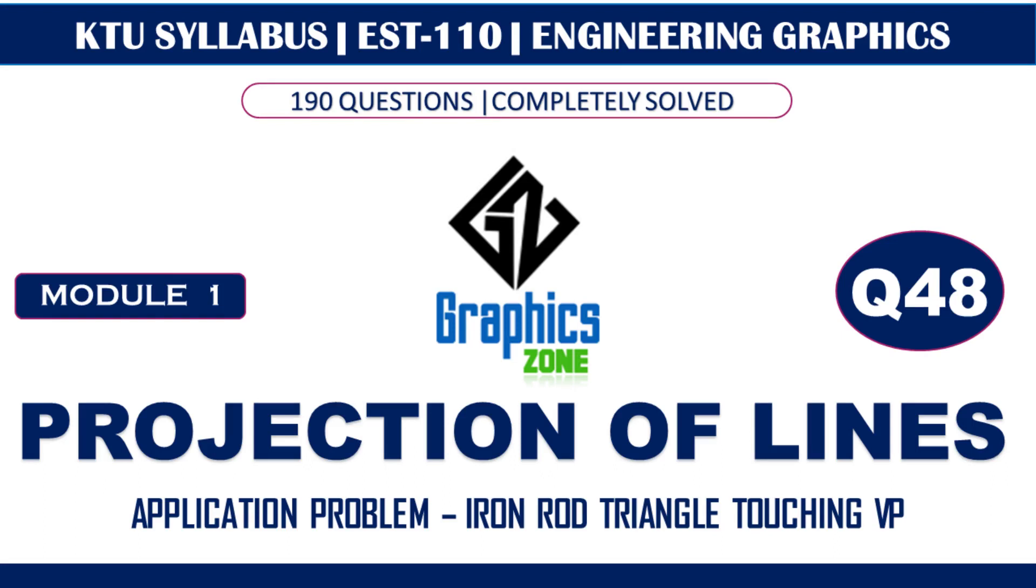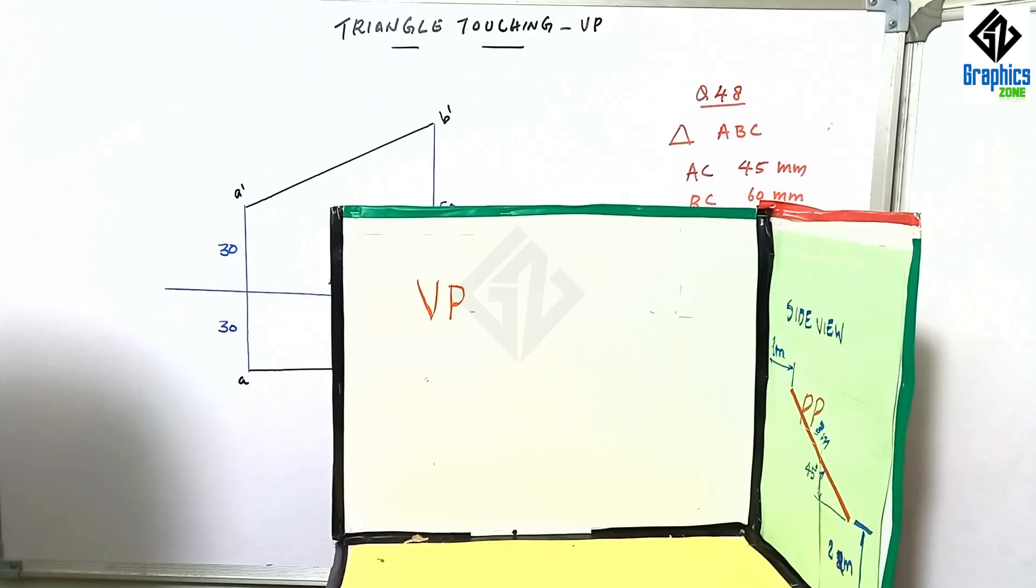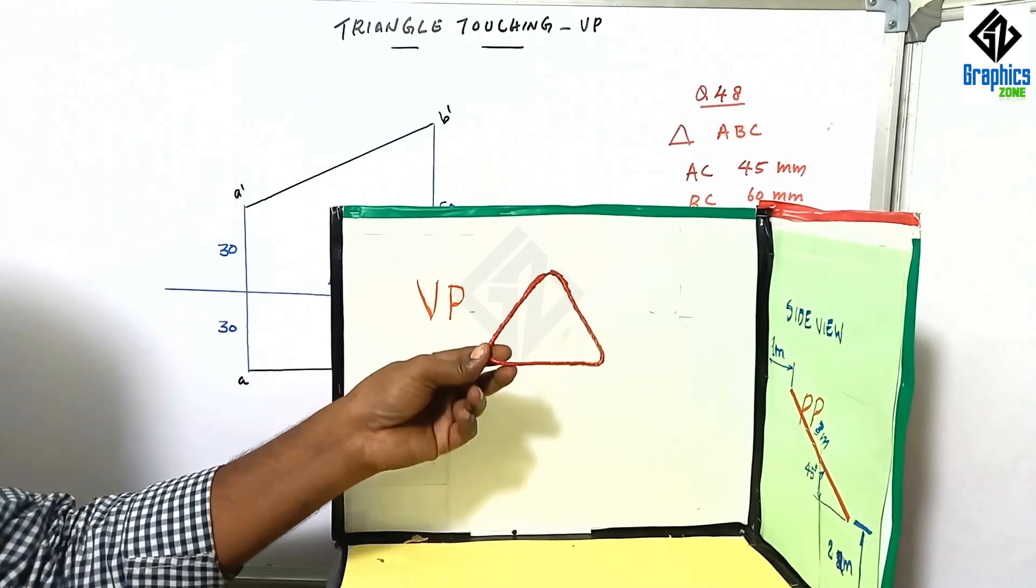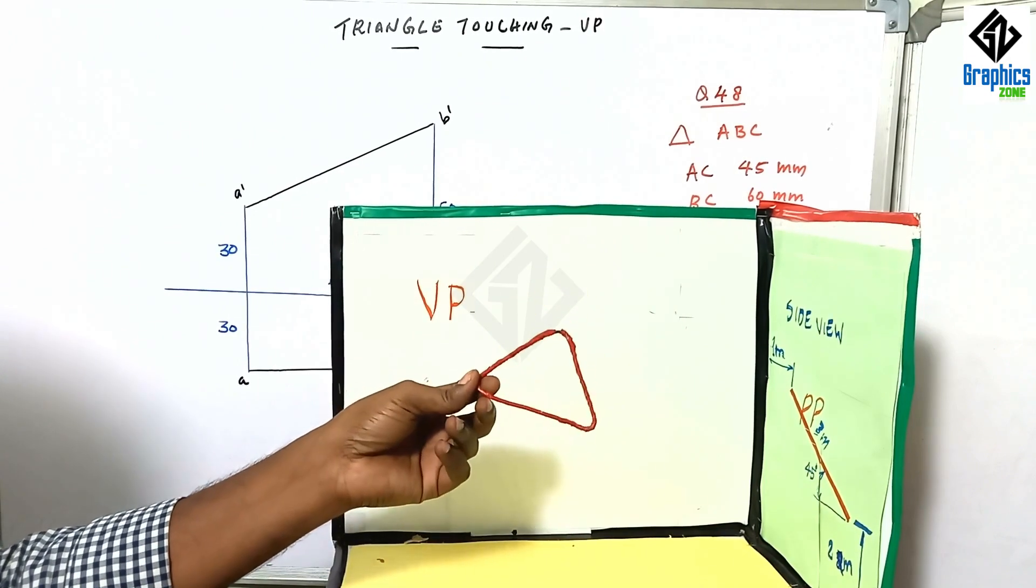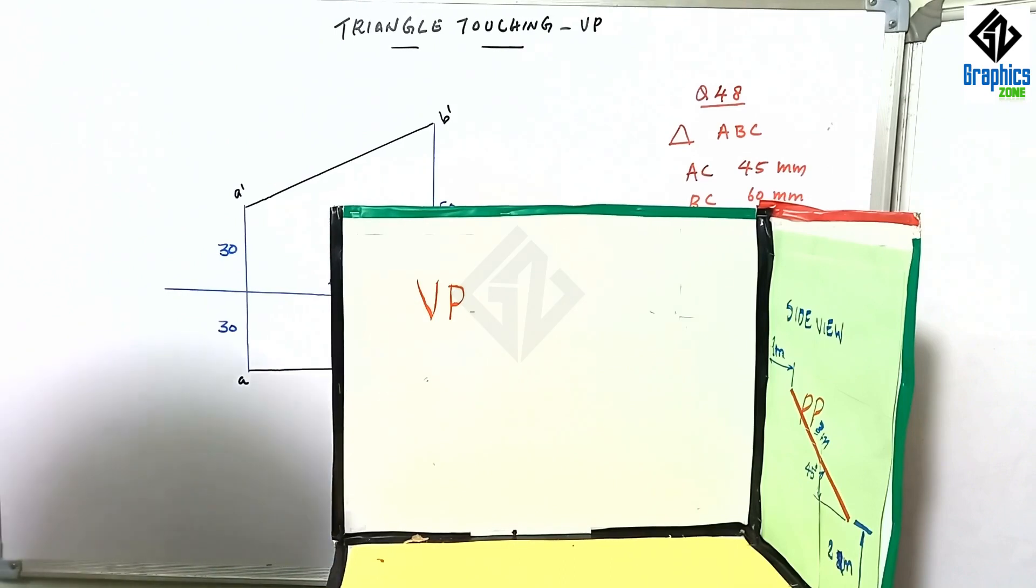So next is question number 48. We have another application problem. In this we have an iron rod which is bent to form a triangle. You can see this is a triangle ABC having some orientation.